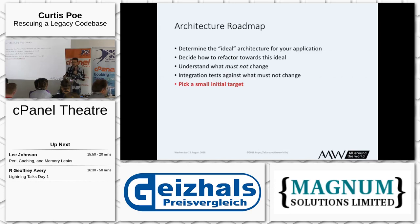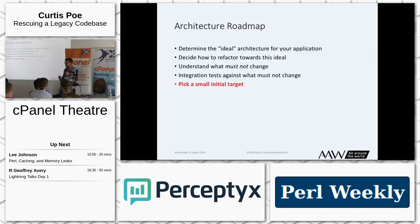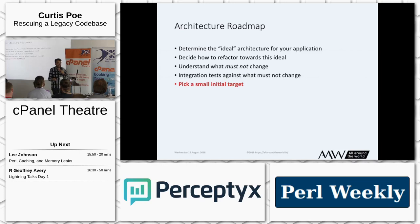And then how do you start? There's almost always something in your system which must not change. For one of our clients, they have this really hideous web interface — gray tables on a lime green background, very small print, obscure icons. They've tried to fix this several times and their support department screams bloody murder. So that's what they can't change. Great — now they know what they can write tests against. Because if that's what can't change, you know exactly where you can have your initial target of tests, and you can go back and look at changing that later.